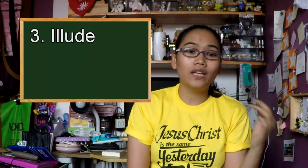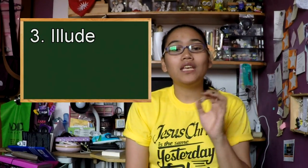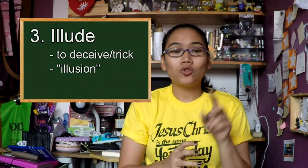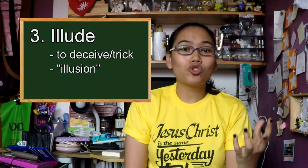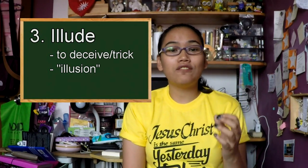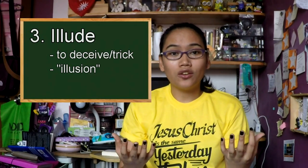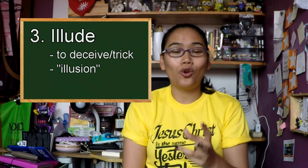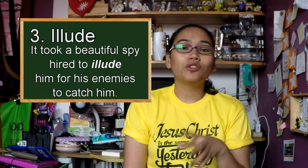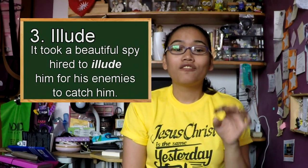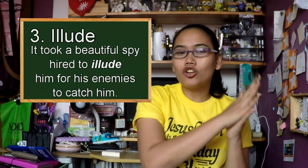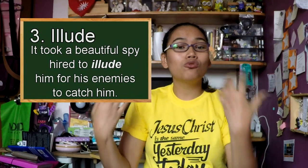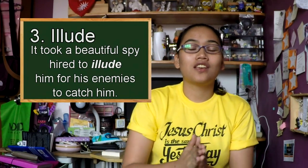Now, illude sounds like both allude and elude. Illude, spelled I-L-L-U-D-E, means to deceive or to trick. The keyword to help you remember it is the word 'illusion.' So when you see I-L-L, think illusion — my form of illusion or deception. Illude means to deceive or trick using an illusion. If you are illuding someone, you are tricking them. So, following our soldier story, we could say: 'It took a beautiful spy hired to illude him for the enemies to catch him.' Meaning, the soldier was deceived — illuded — by a spy, who created an illusion in order for the enemies to catch this brave soldier.